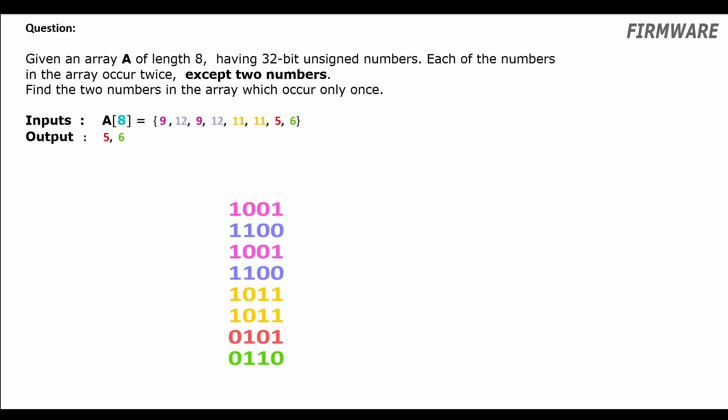Hey guys, in this episode we have a very popular question that we will solve using bit manipulations. The question is we have an input array where all the numbers in the array occur twice except two numbers which occur only once. So we need to find these two unique numbers in the input array.